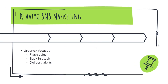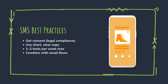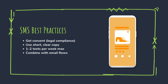Klaviyo isn't just for email — it's also a powerful SMS platform. SMS works best when it's used sparingly and strategically. Think flash sales, back-in-stock alerts, or shipping notifications. Collect phone numbers via forms or checkout, always with consent. Keep messages short, clear, and valuable. For example: 'Hey Sarah, our best-selling candles are back in stock. Grab yours now before they sell out again.' Pair SMS with email for a multi-channel strategy — send a reminder email and follow it up with a text the next day. Just be mindful not to over-message.